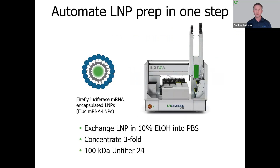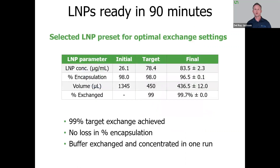If you work with LNPs, it's critical that you get them out of the solvent — the buffer that they've been manufactured in — because it's typically harsh, and you need to do that very quickly. But you don't want to do it so fast or in a way that would compromise your sample integrity. BigTuna gives you a gentle approach in how it processes both your buffer exchange and concentration applications. Not only does it do it fast, but it can give you high sample recovery. In this case, LNPs were processed in as fast as 90 minutes, with no significant loss in the percent encapsulation after running on BigTuna.